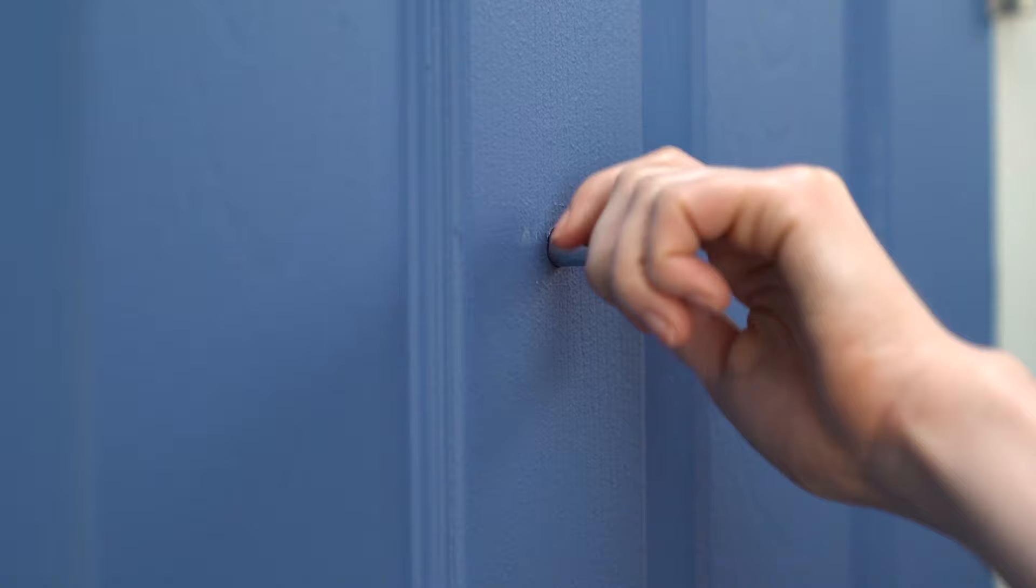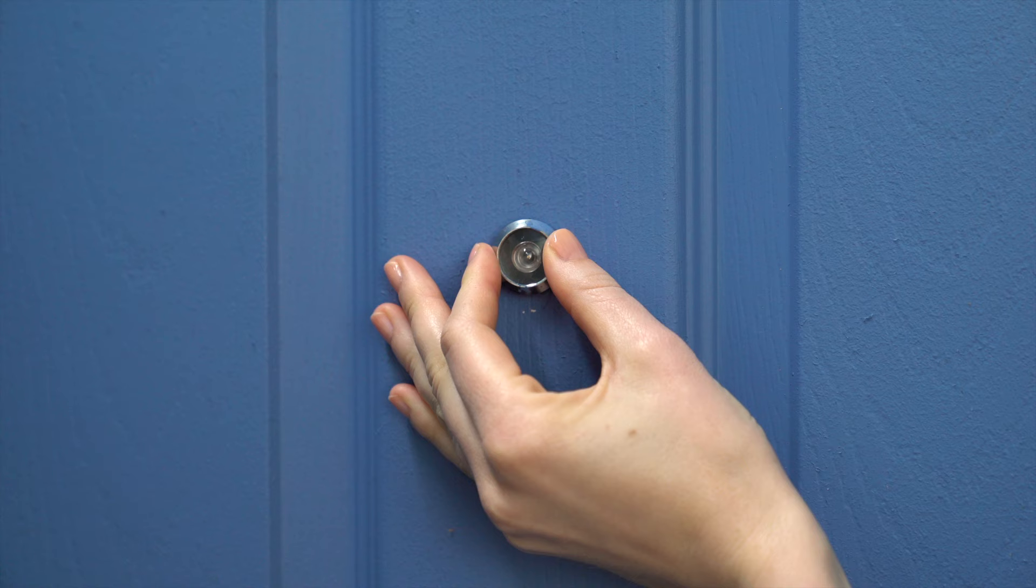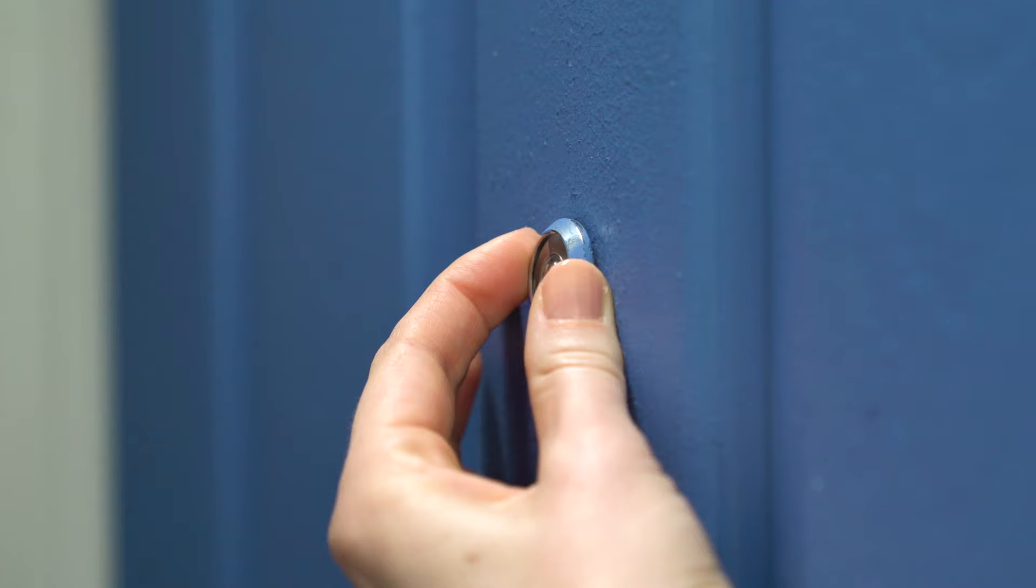Inspect both sides of the peephole for sharp or jagged edges. If needed, use the peephole key to smooth the openings. With the indoor side removed, the outdoor portion should slide right out.